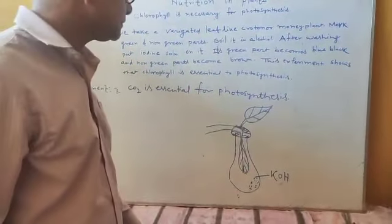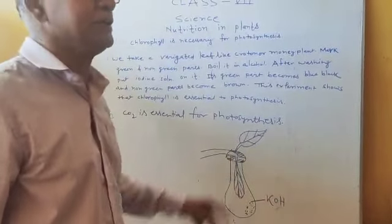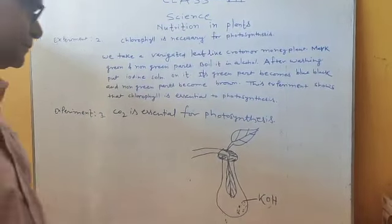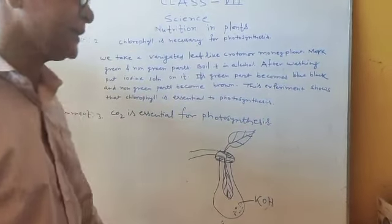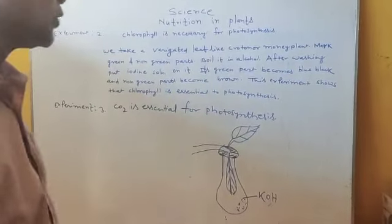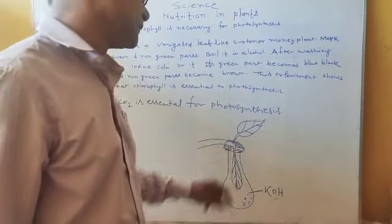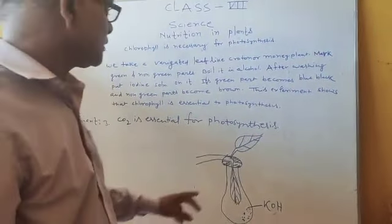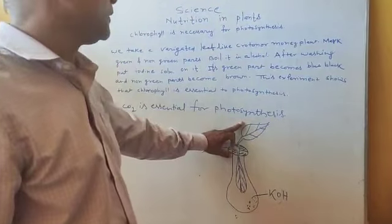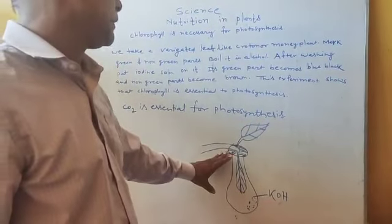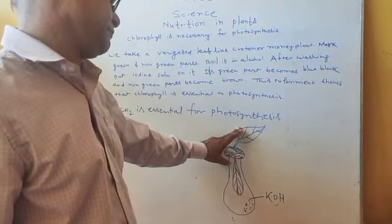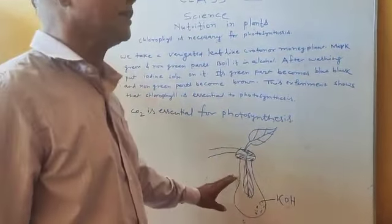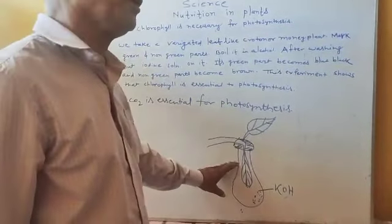After 5 to 6 hours, we remove the two leaves and put them in alcohol solution and warm them. We see that both leaves become non-green after boiling in alcohol. After that, we put iodine solution on both the leaves. We see that the leaf which was outside the bottle becomes blue-black, but the leaf which was inside the bottle becomes brown in color.